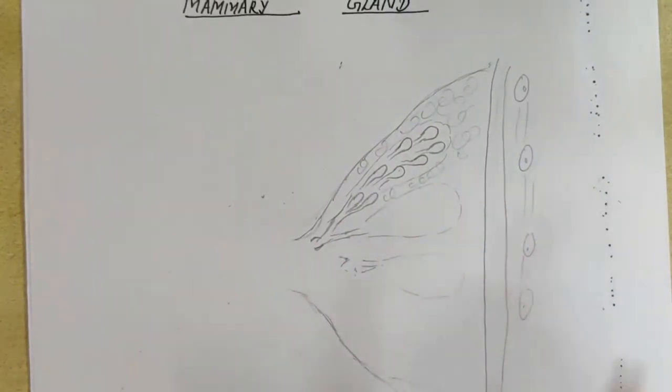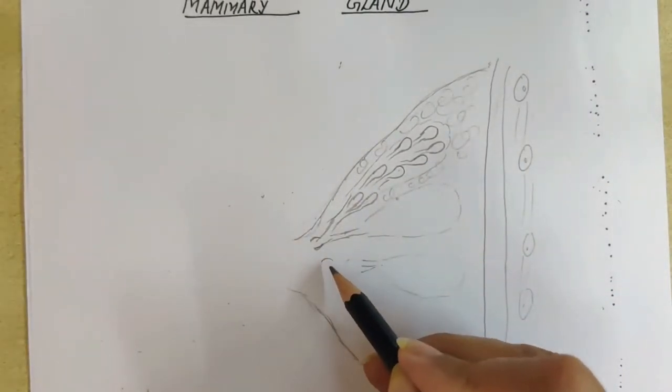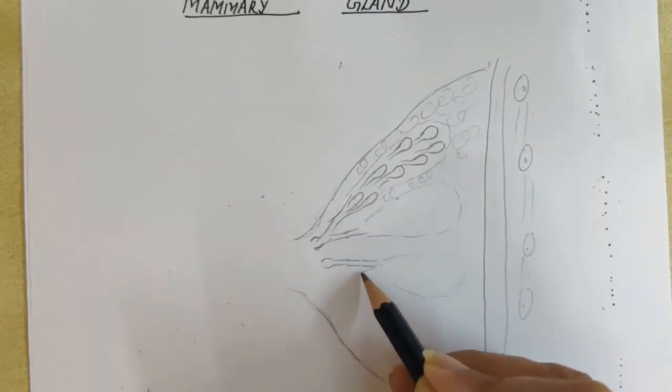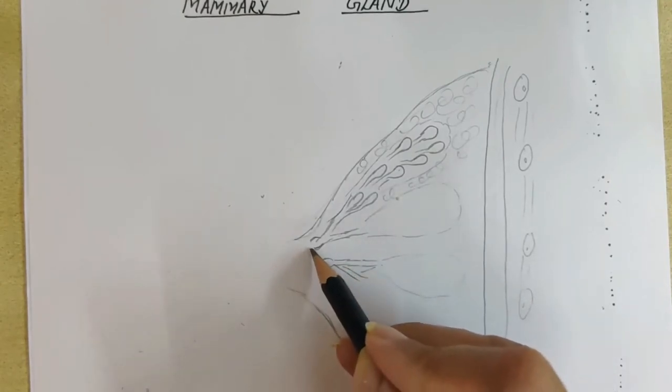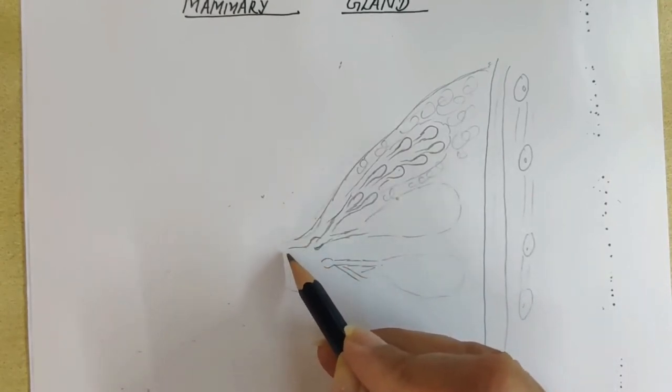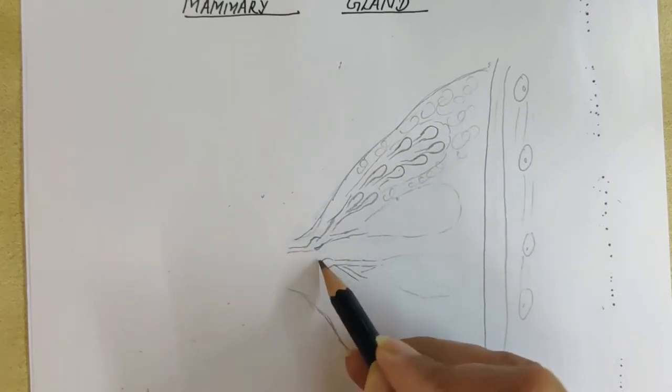From mammary ampulla, the milk will be poured into the lactiferous ducts. These are the lactiferous ducts.